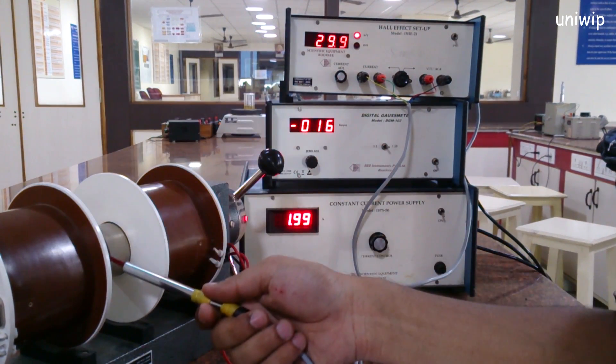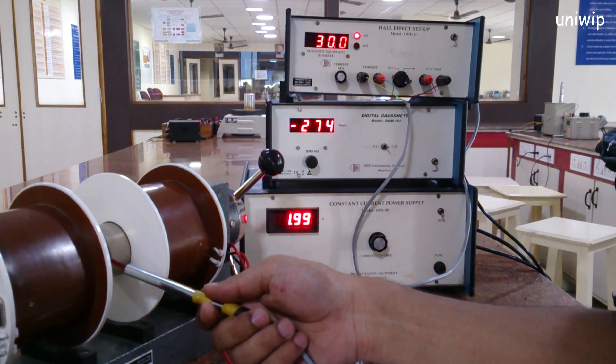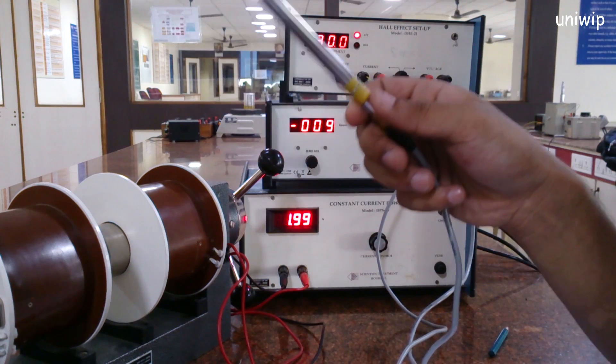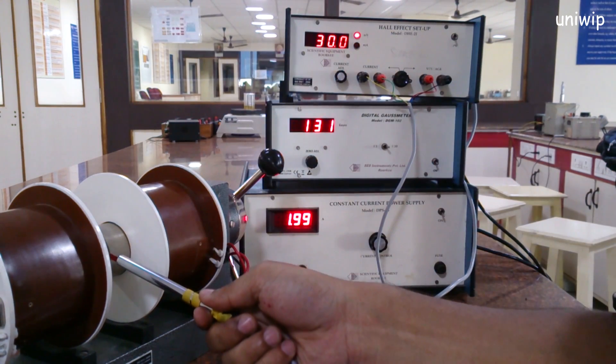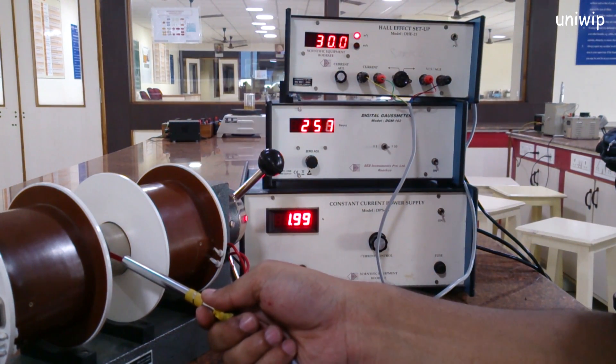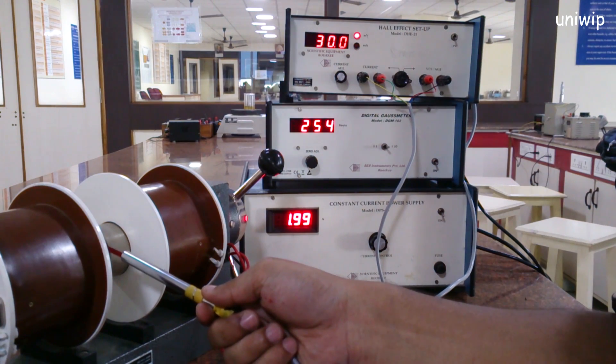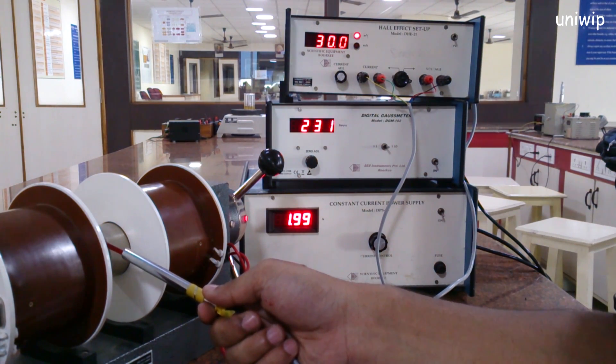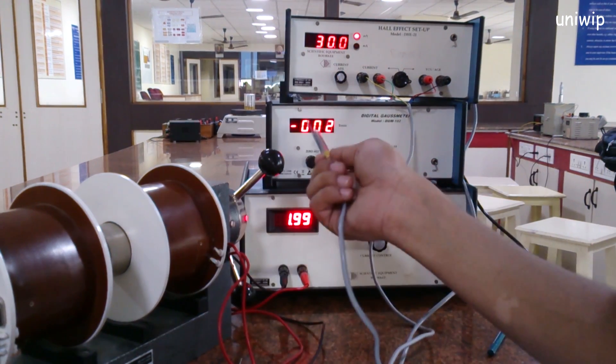Right now you can see there was a minus sign, this minus sign is because of the change in polarity. All I got to do is switch it like this, and there you go, the positive value. So every time you get a negative value when you're putting the Hall probe inside, make sure to just switch the polarity or switch the direction and you get the positive result.